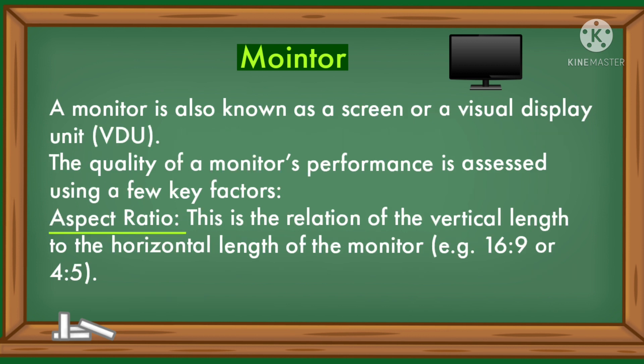A monitor is also known as a screen or visual display unit. The quality of a monitor's performance is assessed using a few key factors. Aspect ratio is the relation of the vertical length to the horizontal length of the monitor.